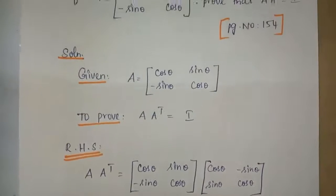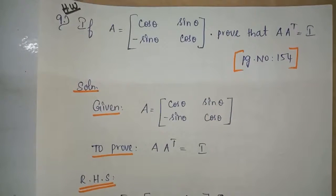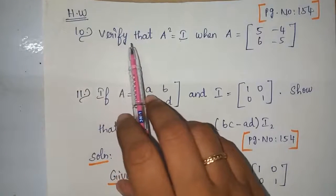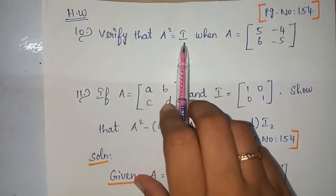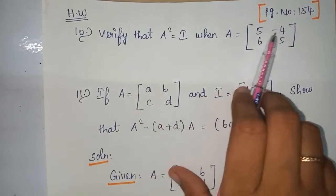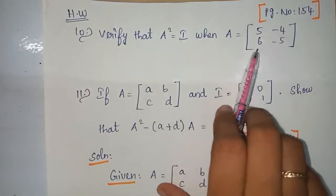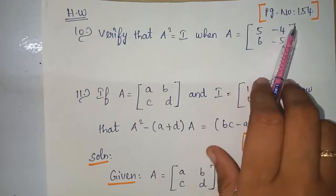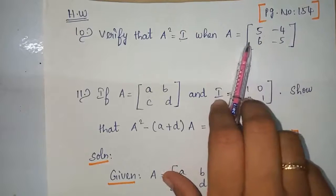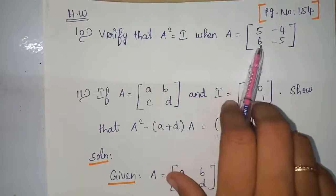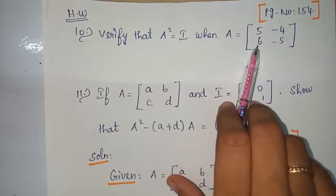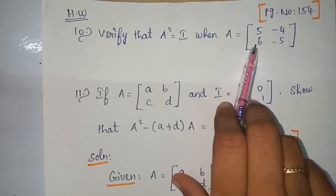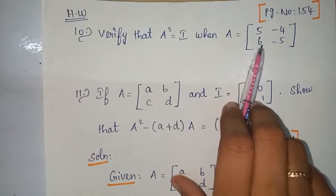Problem number 10 is also your homework: verify that A squared equals I when A equals 5 minus 4 6 minus 5. This belongs to page number 154. You just do the matrix multiplication — that is A into A — and you will get the identity matrix.